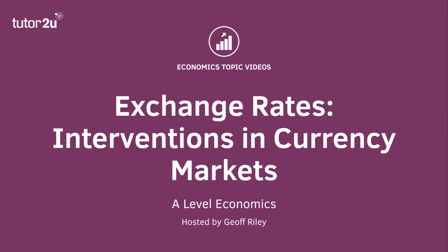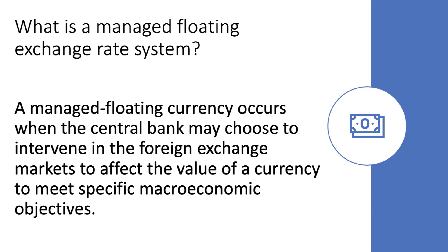Welcome to this macro revision topic video. We're going to spend a few minutes looking at the reasons why a central bank or government might opt for a managed floating currency system, and the options for intervention in currency markets. A managed floating currency happens when the central bank chooses to intervene in the foreign exchange market to affect the external value of one currency against another, oftentimes to meet specific macroeconomic objectives.